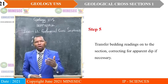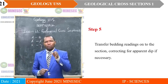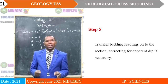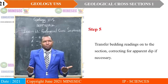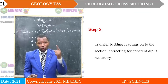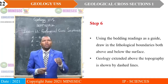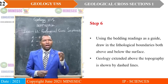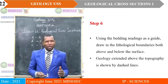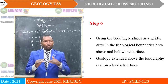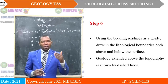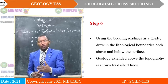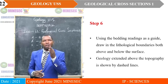For you to draw to scale, you must be sensitive to transferring the bed readings onto the section so they correctly appear as the dips are for the section to be to scale. Step six: using the bedding readings as a guide, draw in the lithological boundaries both above and below the surface. Note that geology extended above the topography is shown by dashed lines, since information above the surface is imaginary — there are no grounds for judgment there.